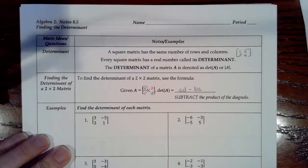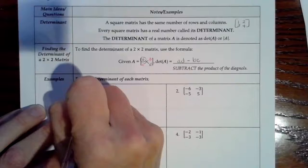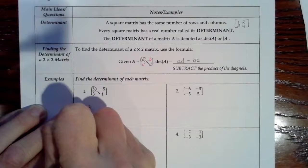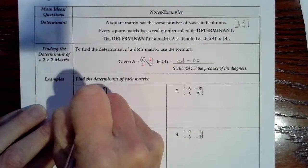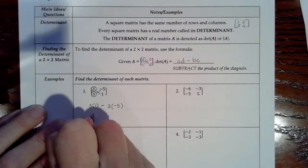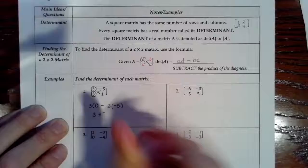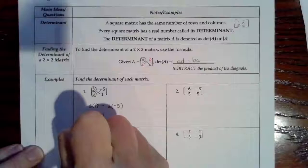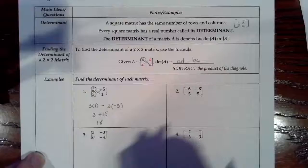Let's do some examples. For number 1, I'm going to start in the top left corner with 3 and multiply 3 times 1. Then I'm going to start in the bottom left corner and subtract 3 times negative 5 to find the determinant. So 3 times 1 is 3, and negative 3 times negative 5 is positive 15. So 3 plus 15 is 18 - my determinant here is 18.